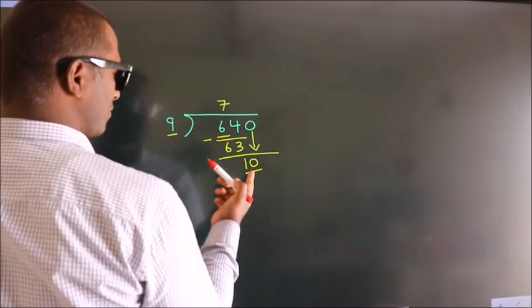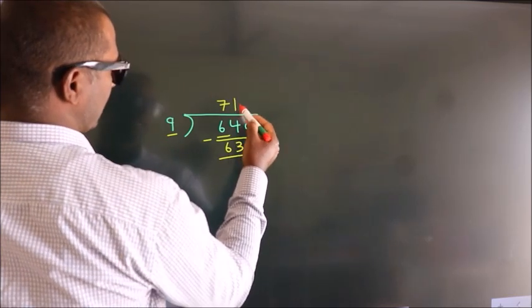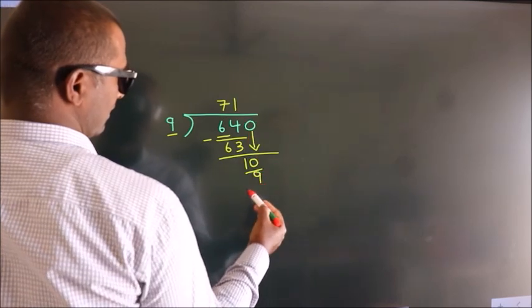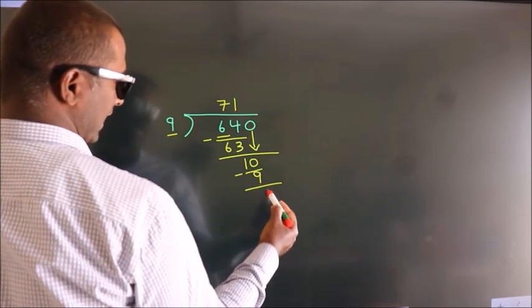A number close to 10 in the 9 table is 9 once, 9. Now we subtract. We get 1.